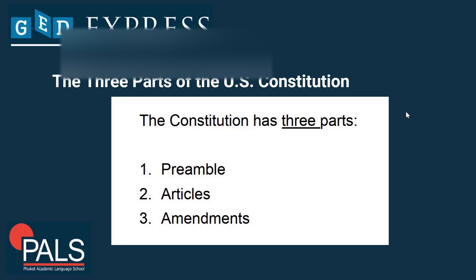Let's talk about the different parts of the Constitution. The Constitution can be broken down into three parts: the preamble, which is essentially an introduction; the articles, which define how the government and its bodies will work; and the amendments, which detail rights and other details and can be changed or added upon.